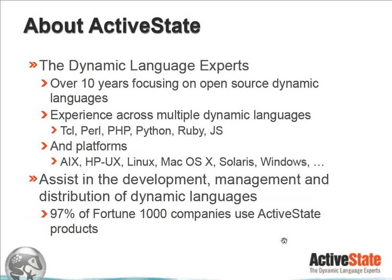So a little bit about ActiveState. We are the dynamic language experts. We have over 10 years focusing on open source dynamic languages, covering Perl, Python, TCL, Ruby, PHP, and JavaScript, on many platforms — from big iron like AIX and HPUX to commodity platforms like Linux, Windows, and Mac OS X. We assist in the development, management, and distribution of dynamic languages, and 97% of the Fortune 1000 are using ActiveState products.